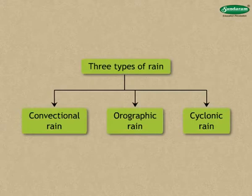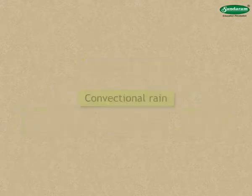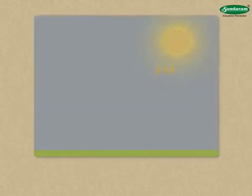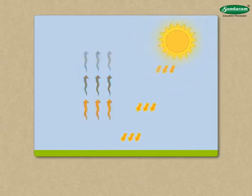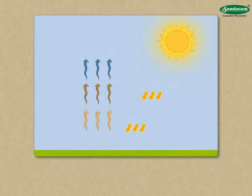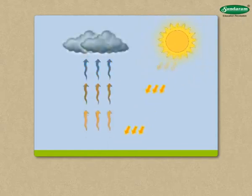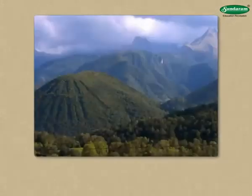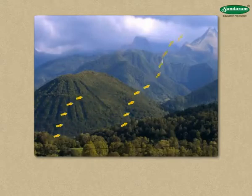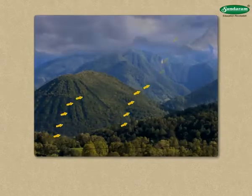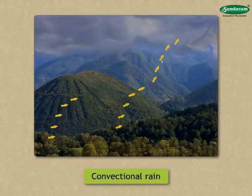Let us study about types of rain. First is Convectional Rain. Air becomes hot due to the heat received from the sun and starts rising higher. When it goes up, the air starts becoming cool and its capacity to hold vapour reduces. Thus, the vapour in the rising air condenses and is transformed into water droplets and it rains. In regions where air moves vertically rather than horizontally, we have this type of rain. This rain caused by the upward flow of hot air is called Convectional Rain.